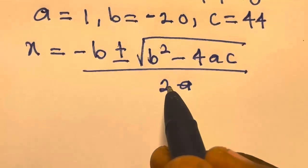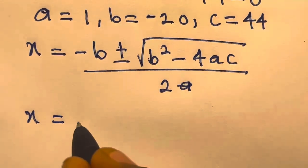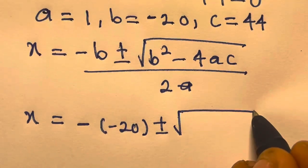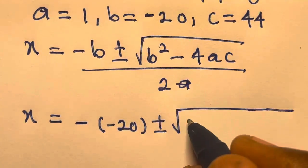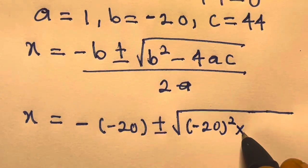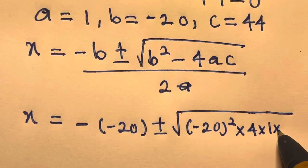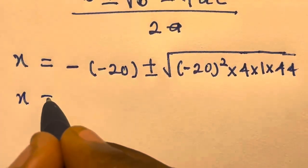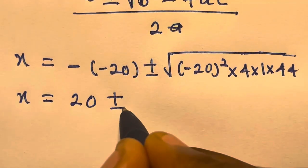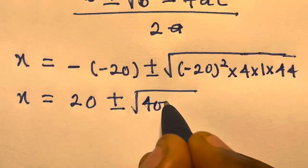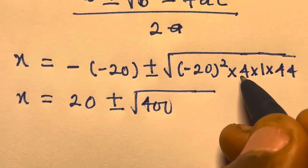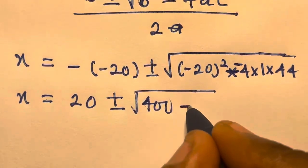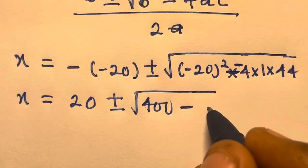So let's substitute these values into this formula. We have x equals minus of minus 20, plus or minus square root of b squared, where b is minus 20 squared, minus 4 times 1 times 44. So we have x equals 20 plus or minus square root of 400 minus 4 times 1 times 44, which is 176.